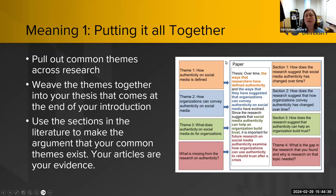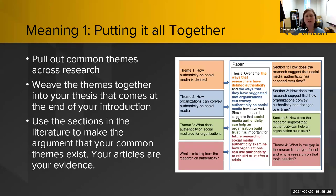You can visualize this by writing common themes in circles or boxes, writing out your thesis, and pulling them out as sections in your paper. For example: a thesis might state that over time, the ways researchers defined authenticity and suggested organizations convey authenticity on social media have evolved, and since social media authenticity can help build trust, future research should examine how organizations use authenticity to rebuild trust after a crisis.